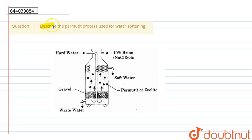The question says describe the permutate process used for water softening. Permutate is an artificial zeolite. Chemically, it is hydrated sodium aluminium orthosilicate.